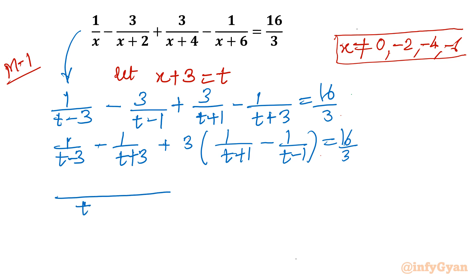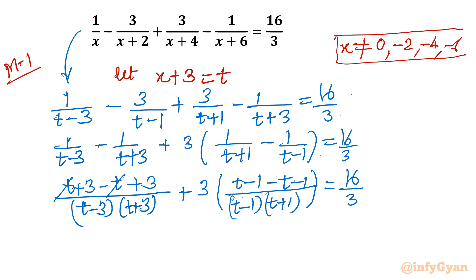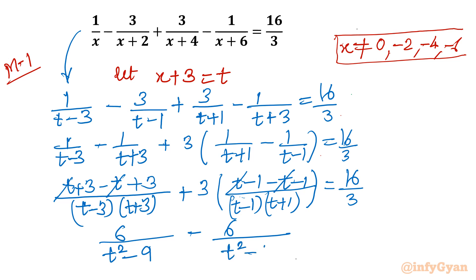Taking LCM of the first pair: the denominator is t minus 3 times t plus 3, and the numerator becomes t plus 3 minus t plus 3, giving minus t and plus t canceling. For the second bracket, the numerator is t minus 1 minus t minus 1, over t plus 1 times t minus 1. This simplifies using the difference of squares a² minus b²: we get 6 over t squared minus 9, then minus 6 over t squared minus 1.